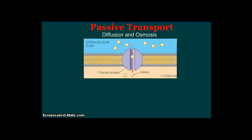Passive transport — diffusion and osmosis. The key here, whenever you look at a diagram like this, and you should expect to see diagrams like this on an assessment, the first thing you want to notice is the molecules that are moving. Notice where the concentration is: here there is a high concentration, and here there is a low concentration.